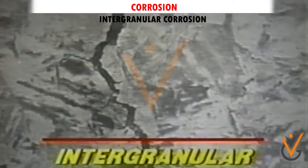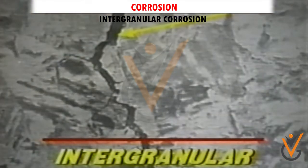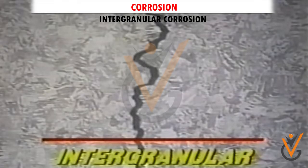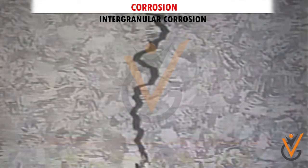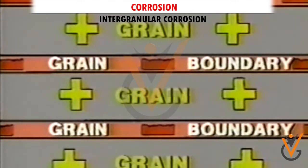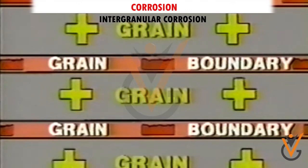Intergranular corrosion: an examination of the microstructure of a metal reveals the grains that form during solidification of the alloy, as well as the grain boundaries between them. Intergranular corrosion occurs along or adjacent to these grain boundaries, seriously affecting the mechanical properties of the metal while the bulk of the metal remains intact.